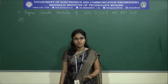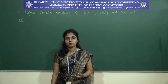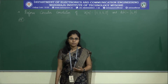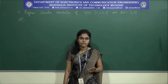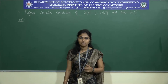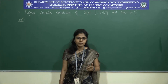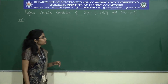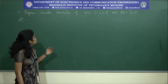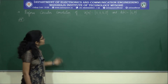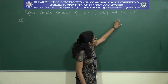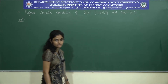In the previous sessions we saw a problem on circular convolution where the length of the two sequences were equal. Now let us take up a problem in which the length of the two sequences is different. The question is: perform circular convolution of x(n) = {1, 3, 5, 7} and h(n) = {4, 8}.